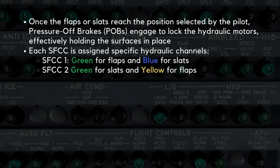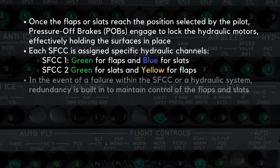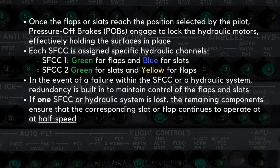Each SFCC is assigned specific hydraulic channels, with SFCC1 controlling green hydraulics for flaps and blue hydraulics for slats, and SFCC2 using green for slats and yellow for flaps. In the event of a failure within the SFCC or a hydraulic system, redundancy is built in to maintain control. If one SFCC or hydraulic system is lost, the remaining components ensure that the corresponding slat or flap continues to operate, albeit at half speed. This slower speed minimizes stress on the system while maintaining the ability to adjust the surfaces.